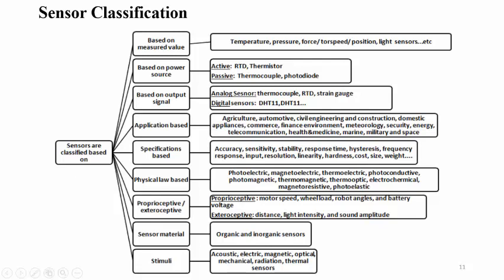The next classification is based on the power source. Sensors are classified into two main categories: active and passive. Active sensors require an external source or energy for working — for example, RTD, which stands for resistance temperature detector, a temperature-dependent thermistor. Passive sensors include thermocouple, thermopile, or photodiode kind of sensors.